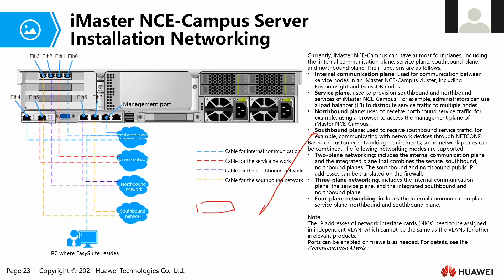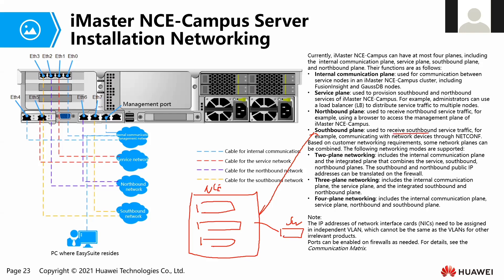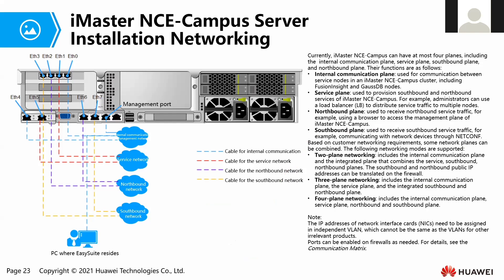Next we have the southbound plane. The southbound plane is used by NCE Campus to manage the southbound traffic. By using the southbound service traffic — using NETCONF — our switches will exchange data through the southbound plane. Overall, we have four planes: the first is internal communication, the second is service plane, the third is northbound, and the fourth is southbound.